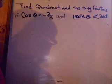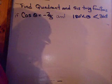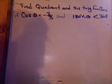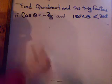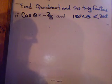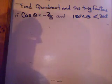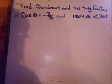This section is going to help you with page 566 in the textbook. Find the quadrant and the six trig functions if cosine is negative two-thirds and theta is between 180 and 360.